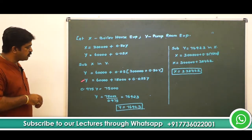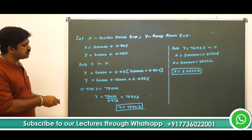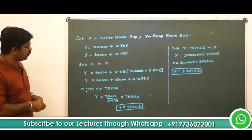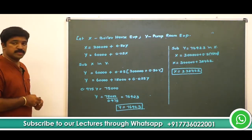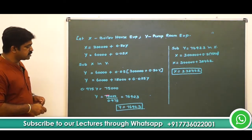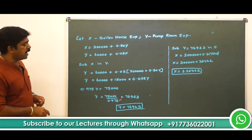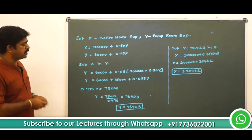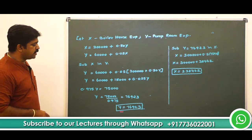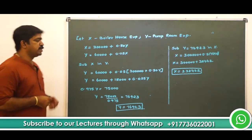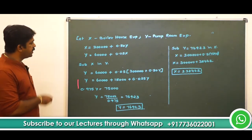Shifting 0.025y to the left-hand side: y − 0.025y = 0.975y = 75,000. Therefore y = 75,000 ÷ 0.975 = 76,923. So pump room expense y = 76,923.